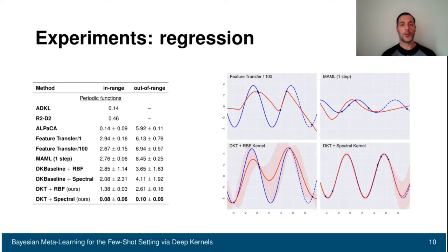Now we can see some regression experiments. Here we have periodic function prediction. We sampled different periodic functions represented by the blue curve on the right plots. And on this trajectory, we sample a few data points. In this case, five. Then we want to approximate with our model, this blue curve. This is the red curve.